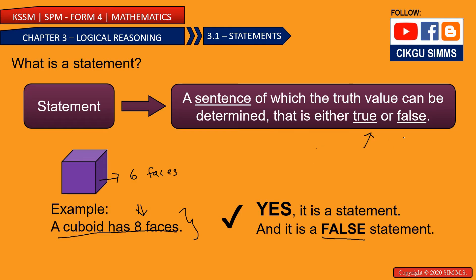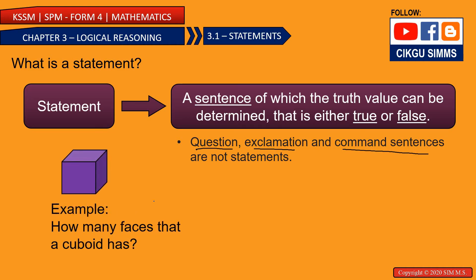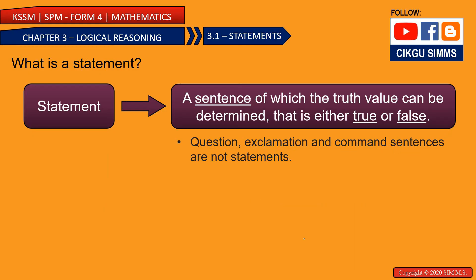Based on the definition, a statement can be true and can be false, and you need to be able to determine whether it is true or false. If you cannot determine whether it is true or false, it is not a statement. For example: 'How many faces does a cuboid have?' This is a question. It is not a statement because the truth value cannot be determined.